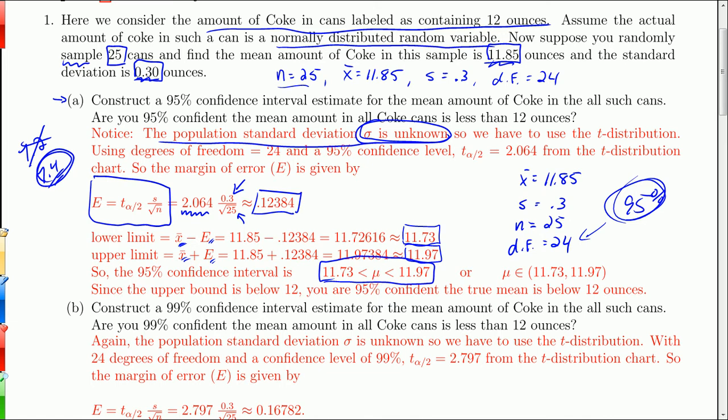The second little question here. Are you 95% confident that the mean amount of all Coke cans is less than 12 ounces? Because the can says 12 ounces, and your 95% confidence interval is 11.73 to 11.97, specifically below 12. So yes, since that upper bound is below 12, you are 95% confident the true mean is below 12 ounces.